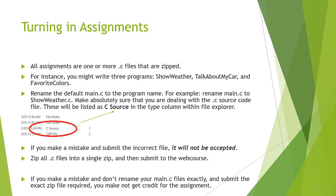Make absolutely sure you're dealing with the C source code file — these will be listed as 'C source' in the type column within File Explorer. I can't tell you how many times people have turned in .cbp files, which are Code Blocks project files and don't contain the source code. If you turn those in, you will not get credit. If you have more than one .c file, which is almost all assignments, you need to zip them into a single zip file and submit that to the web course. All assignments specify the names of the .c files and the zip file to submit. If you make a mistake and don't rename your files exactly or submit the exact zip file required, you may not get credit.